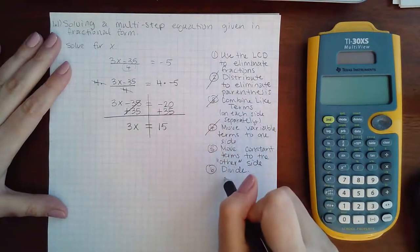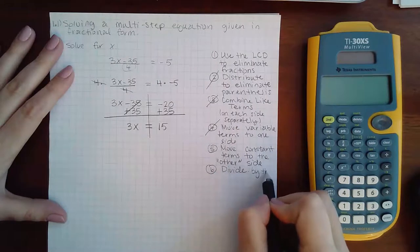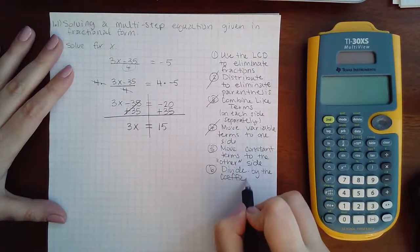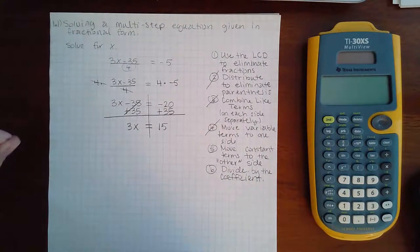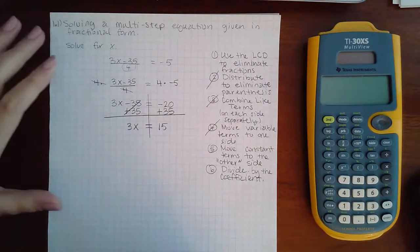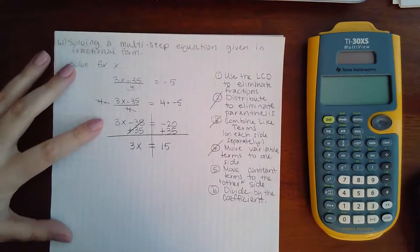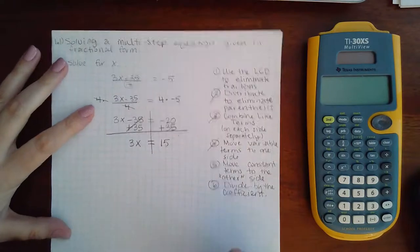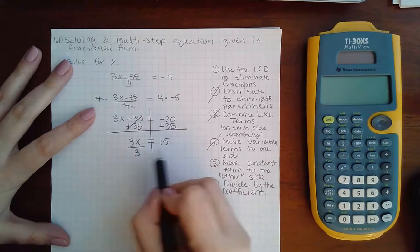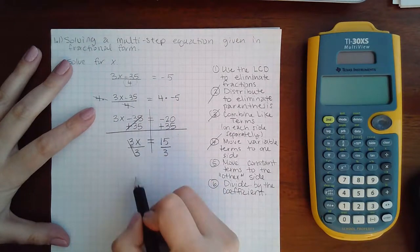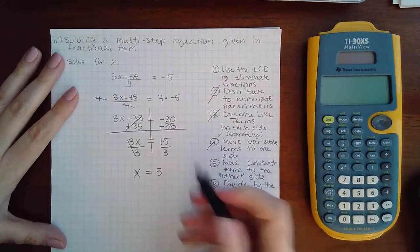And then the very last step to do is to divide by the coefficient. Coefficient is a fancy word for the number in front of the variable, and variable is a fancy word for the letter. So we're saying the number in front of the letter. So the number in front of the letter here is three. So I'm going to divide both sides by three, and I get x equal to five.